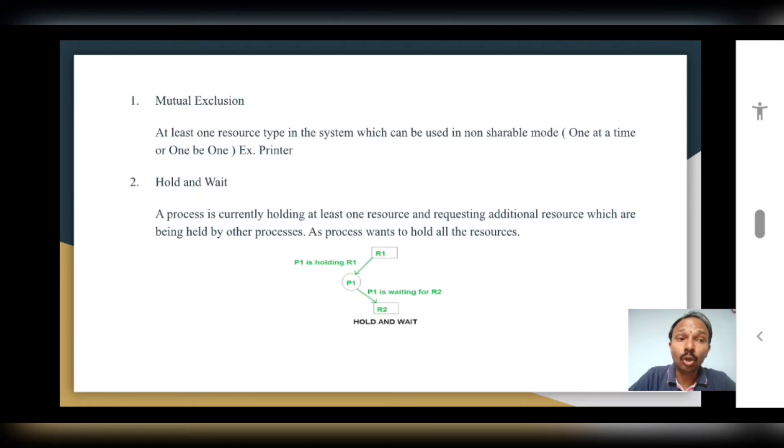Now what about the next, hold and wait? So let us say mutual exclusion is there. Now what is hold and wait? As you observe in this diagram, the process is holding the resource R1 and is still waiting for R2. So this is known as hold and wait.